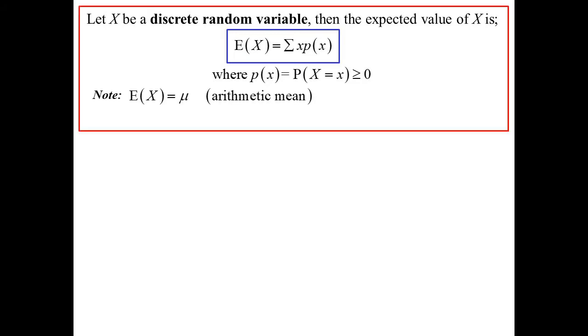With discrete random variables, the expected value was the sum of X times PX. So where our probabilities are obviously greater than or equal to zero. It turned out that was the same as just the average or the mean of the data. And that's what we call a measure of central tendency, roughly where the middle of the data is.